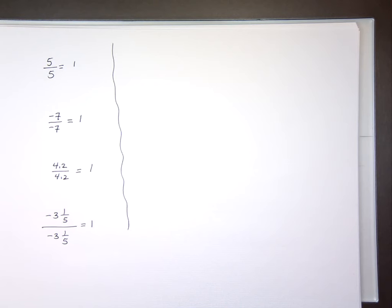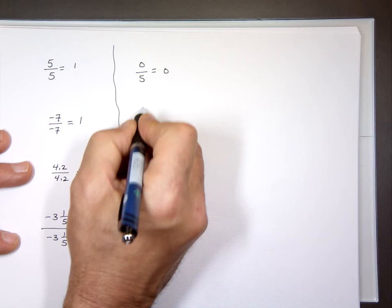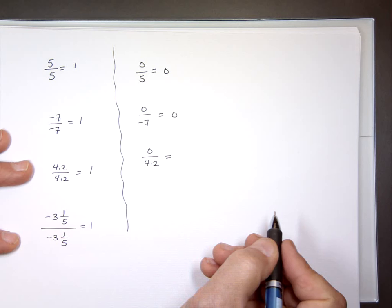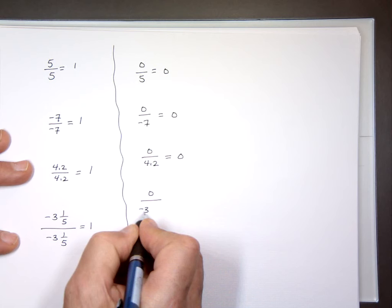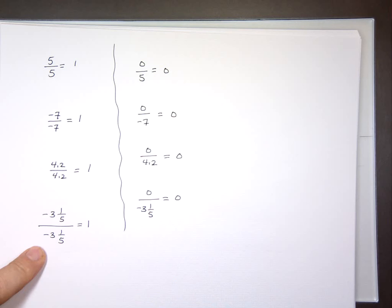Second rule to remember: if you have zero on the top, what's 0 over 5? Zero. What's 0 over negative 7? Zero. What's 0 over 4.2? Zero. What's 0 over negative 3 and one-fifth? Zero. When you have a fraction with zero on the top, the answer is always zero — with the same exception I'll come back to.